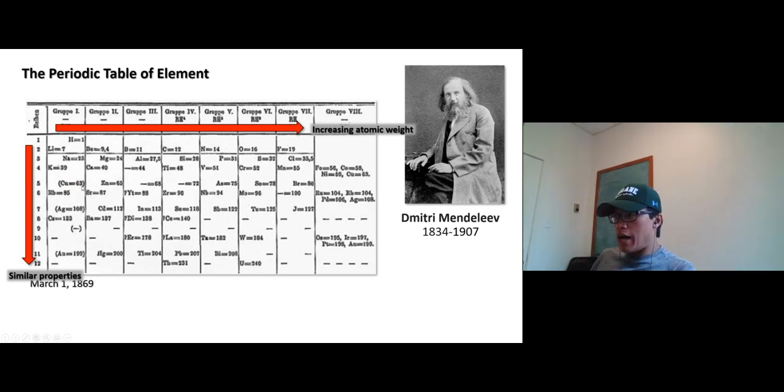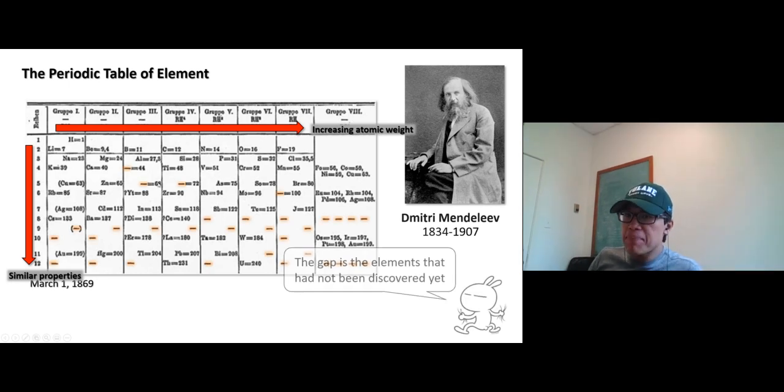And one of the best features of this periodic table is, take a look right here, the gap. Mendeleev knew that we still have a lot more elements waiting to be discovered, so he leaves gaps right here and thinks that in the future, chemists and scientists will discover more and more elements, and one day the periodic table will be complete.